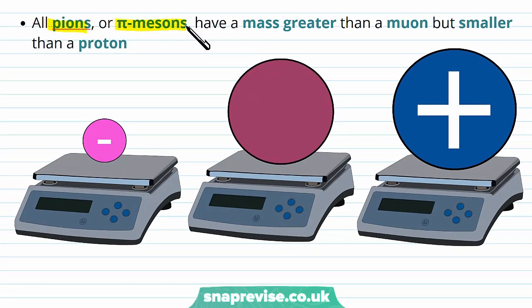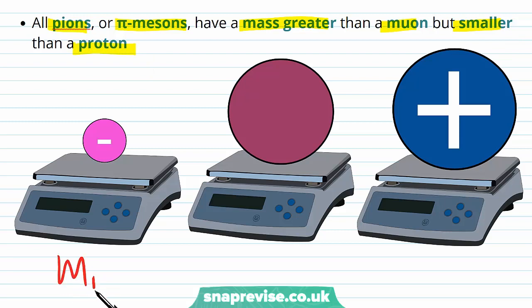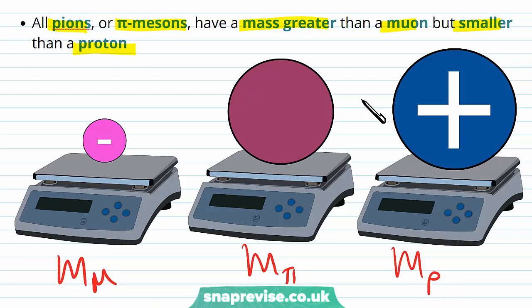All pions, or pi mesons, have a mass greater than a muon but smaller than a proton. So comparing the masses of a muon, a pion, and a proton: the proton has the greatest mass, then the pion, and the muon has the smallest mass of the three.